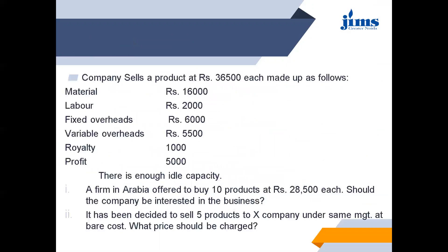Let's discuss an example. A company sells a product at Rs. 36,500, described as follows: material Rs. 16,000, labour Rs. 2,000, fixed overheads Rs. 6,000, variable overheads Rs. 5,500, royalty Rs. 1,000, and profit margin Rs. 5,000. The company has enough idle capacity and wants to enter a new market.